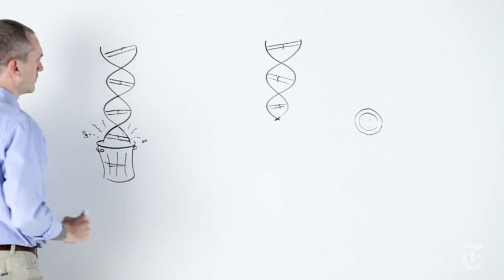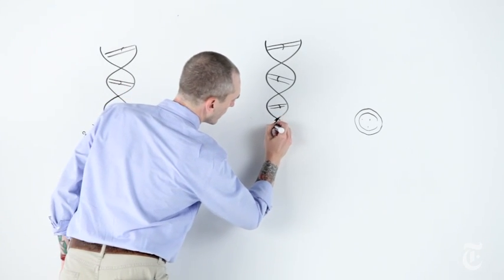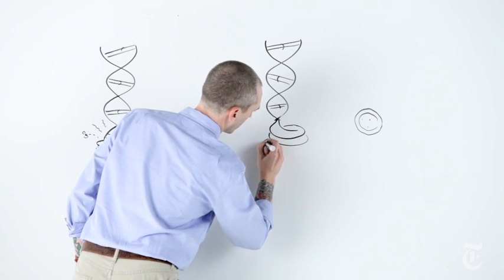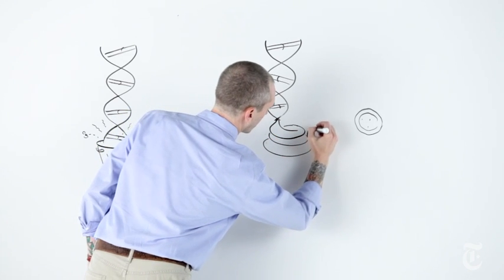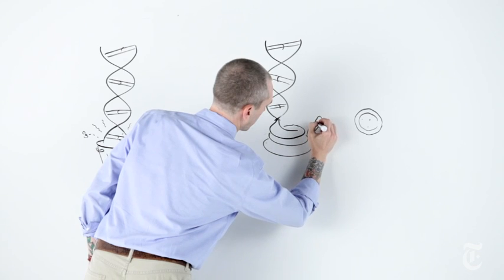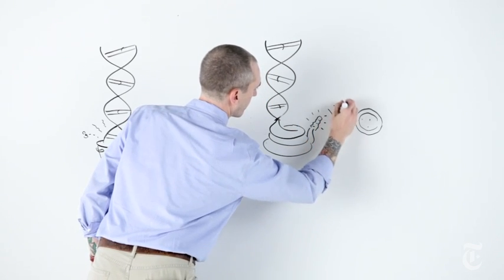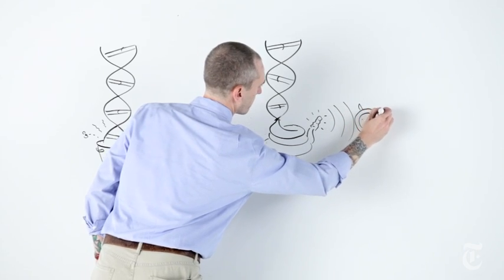But maybe this junk is more of a loose cannon than we think. Some believe that junk DNA may sometimes send out signals that offset the delicate balance between a healthy cell and a malignant one. It may tip the scales of self-regulation until a cell turns cancerous.